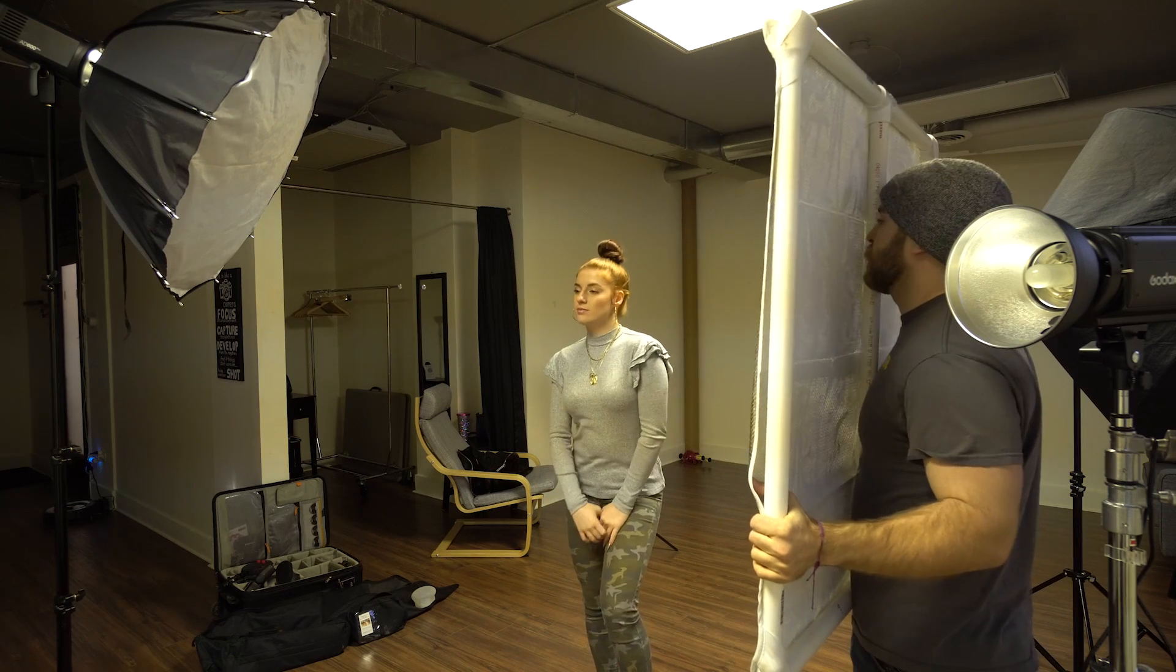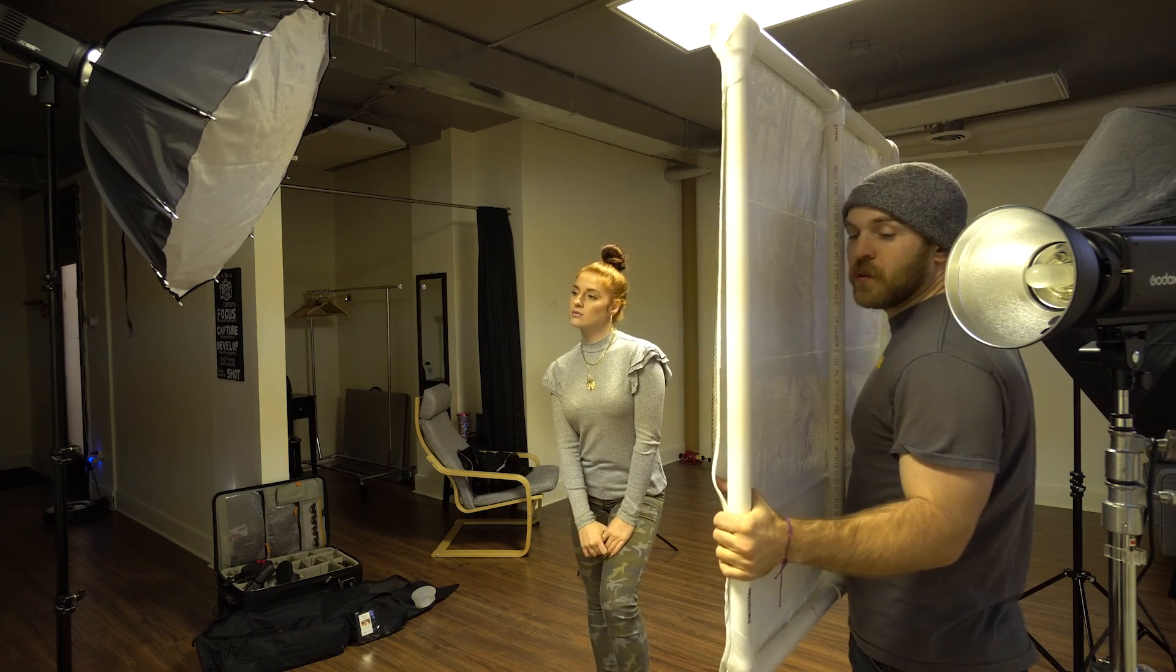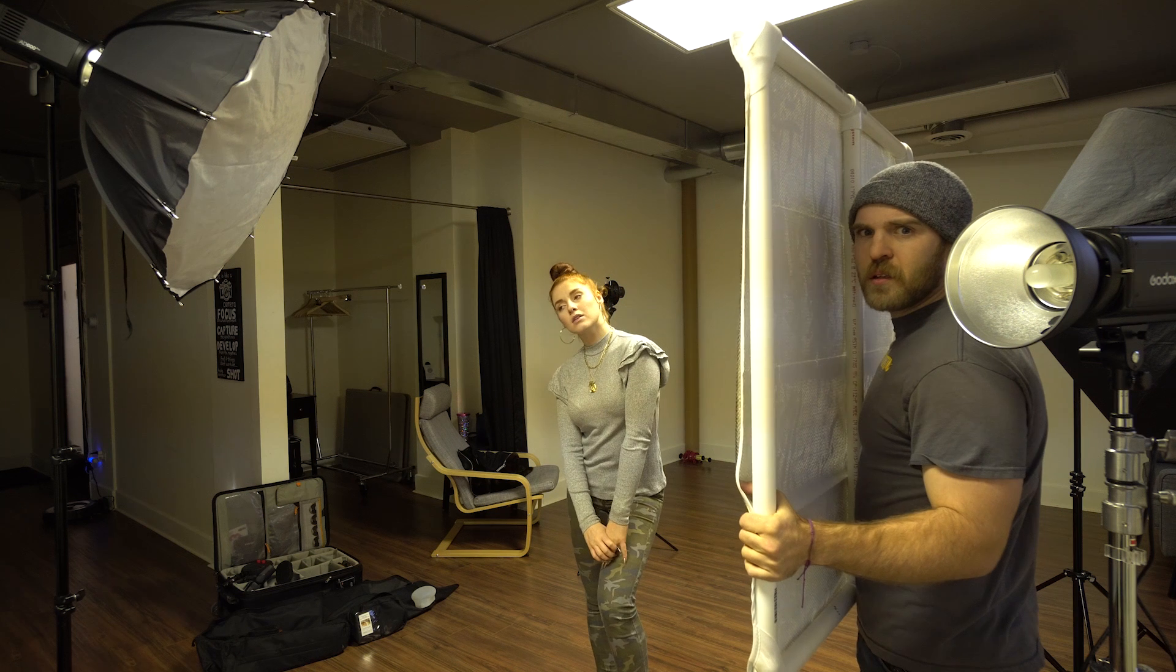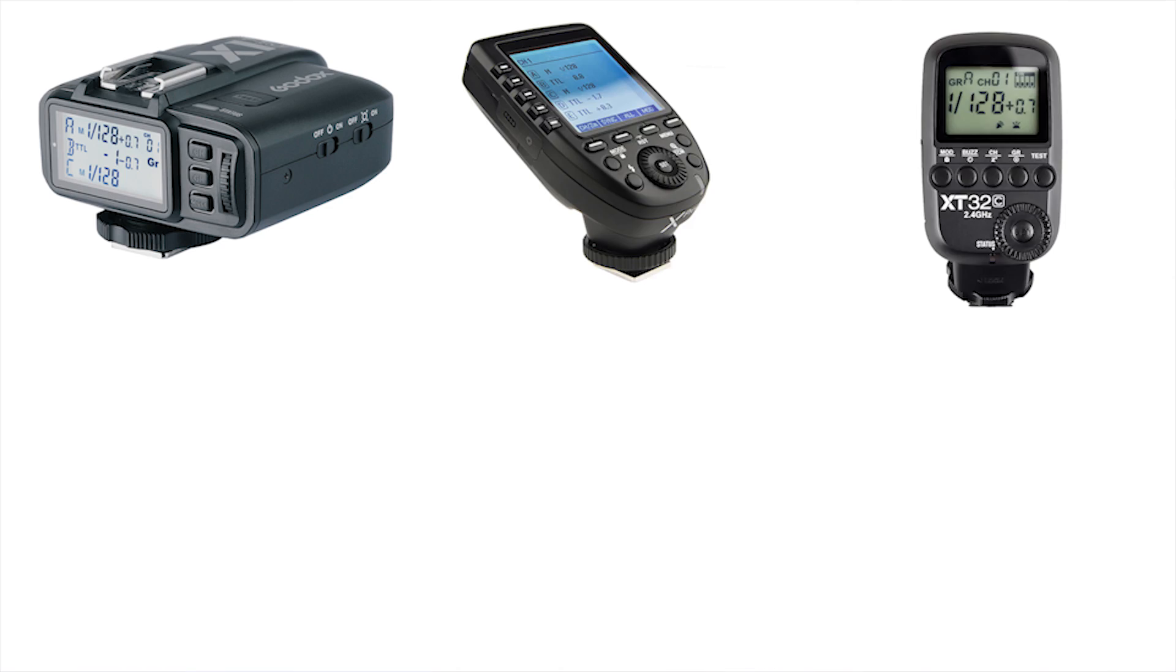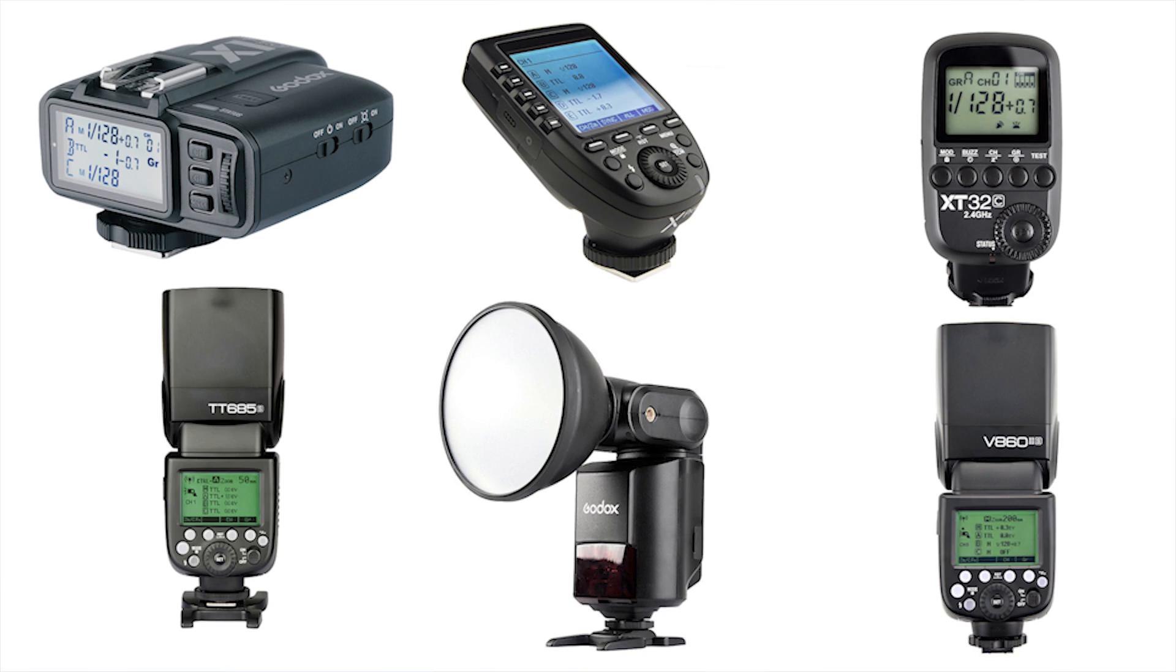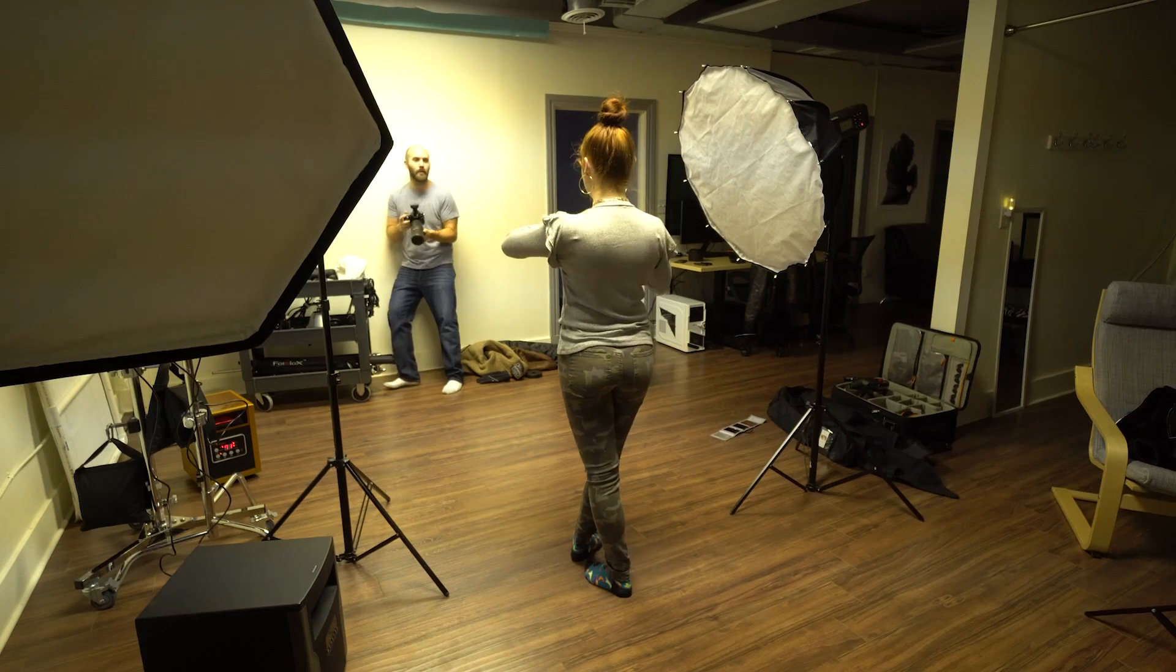The AD600 Pro still operates on the same 2.4 gigahertz radio equipment that the entire X series is built on, which means it will still receive a signal from the X1, X Pro, XT32, or any X series speed lights. Built-in is the TTL and HSS protocols for Nikon, Canon, Sony, Fuji, Olympus, Panasonic. So as long as you have the proper transmitter to control it, it's going to receive the signal from any of those and operate with full compatibility.